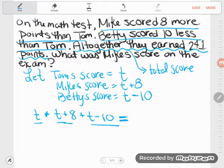And this is all their scores altogether, the total of their scores. And I know according to this problem, that altogether, those scores have to total 241 points. So if I were to add those three expressions, it should add to 241. And now I have the equation that I need.